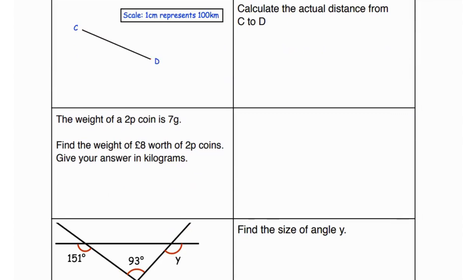Next, calculate the actual distance from C to D. We've been given a line CD and a scale where one centimeter represents 100 kilometers. So you would measure the length of CD using a ruler. Since I'm doing this online I can't measure this, so I'm going to assume that CD equals 3.5 centimeters.